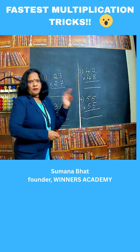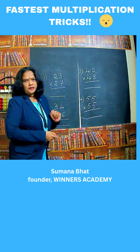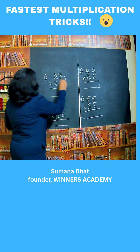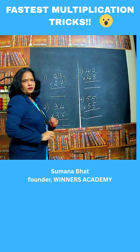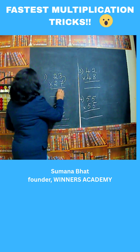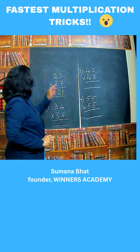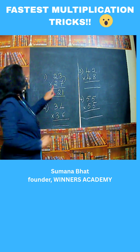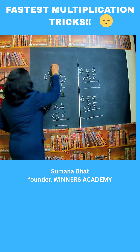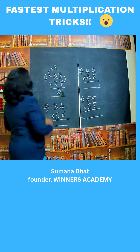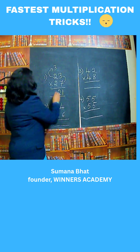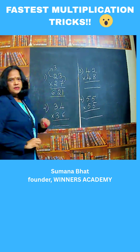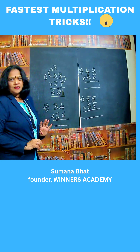23 multiplied by 27. See what we should do. Multiply these two: 3 into 7. 3 times 7 is 21. Here we have 2 and 2, same numbers. Multiply this number by the next number. 2 times 3 is 6. So the answer is 621.